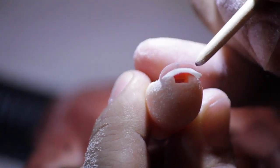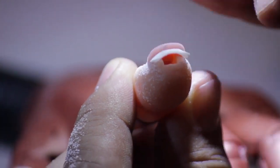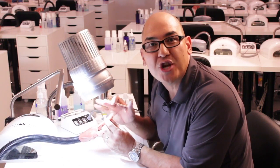Remember, you're going to end up filing it back into shape anyways. You want to make sure your corners are just as high as here so that when you file it into shape, you won't have shadows.